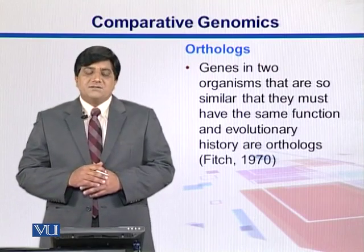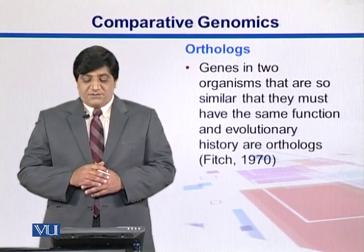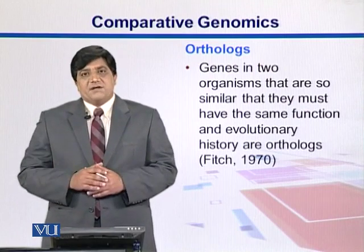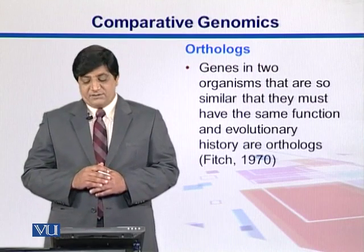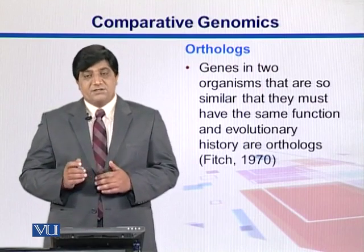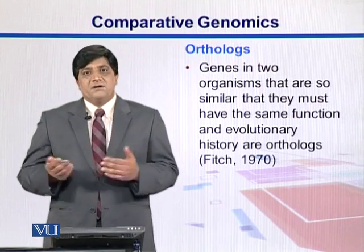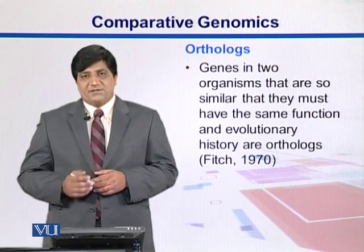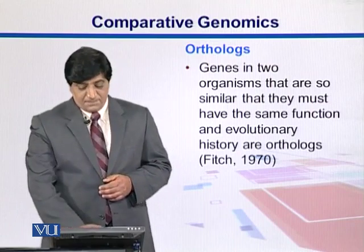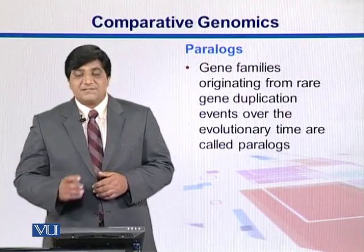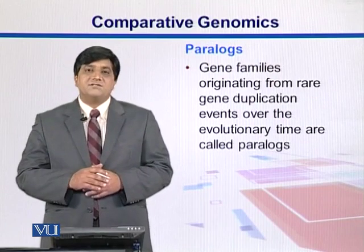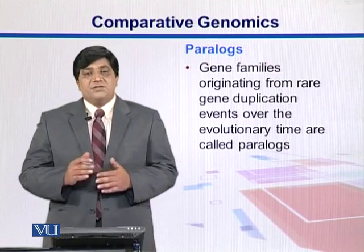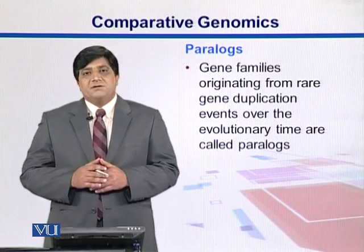Orthologues are the genes which are present in two organisms, and they are so similar that it seems like they share the same evolutionary history. Paralogues, on the other hand, are gene families originating from gene duplication.